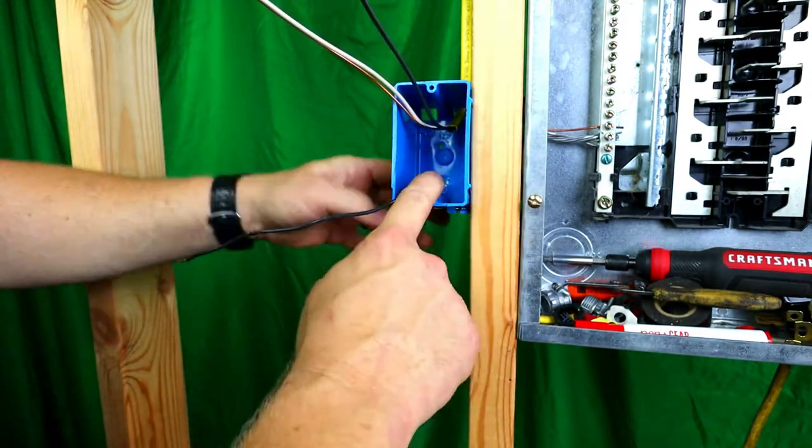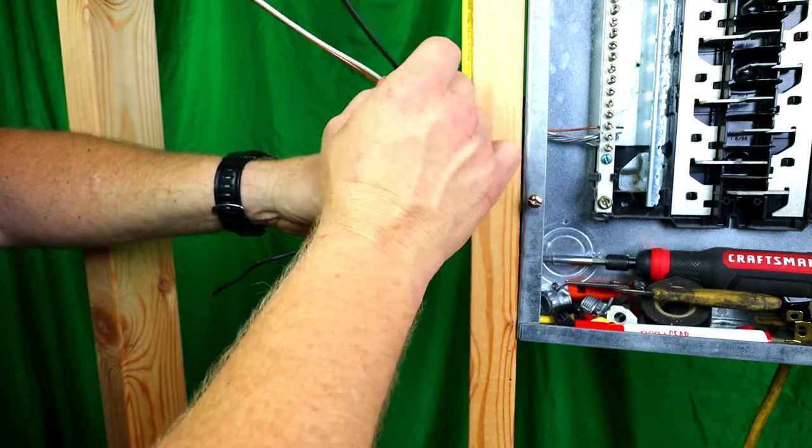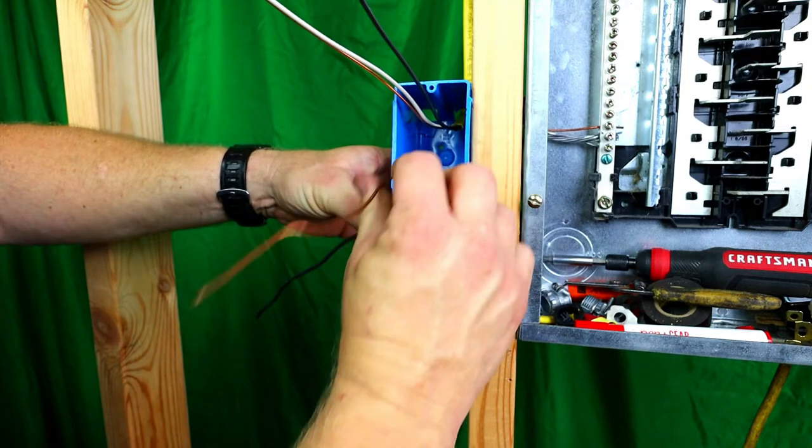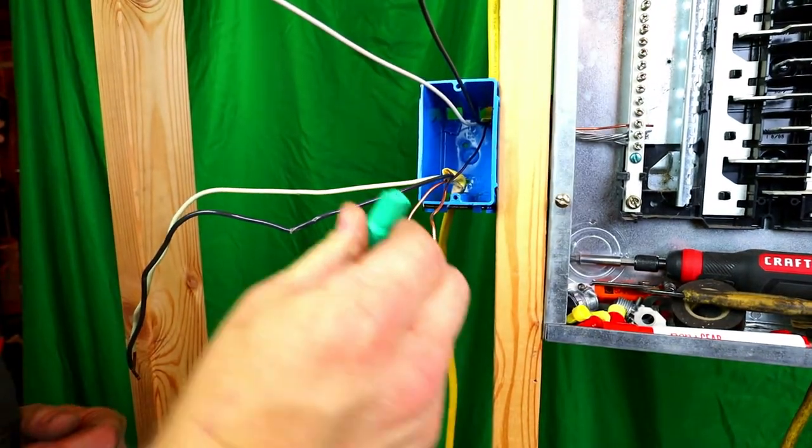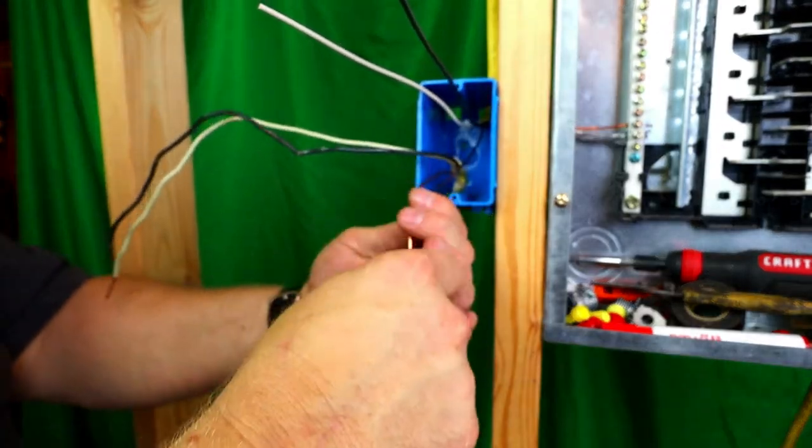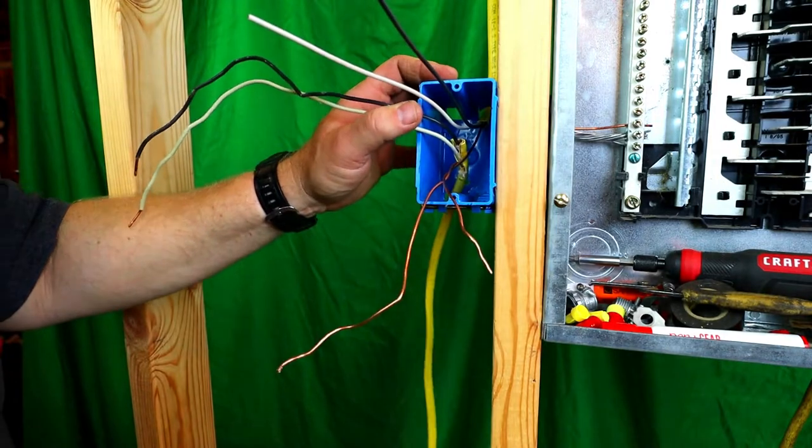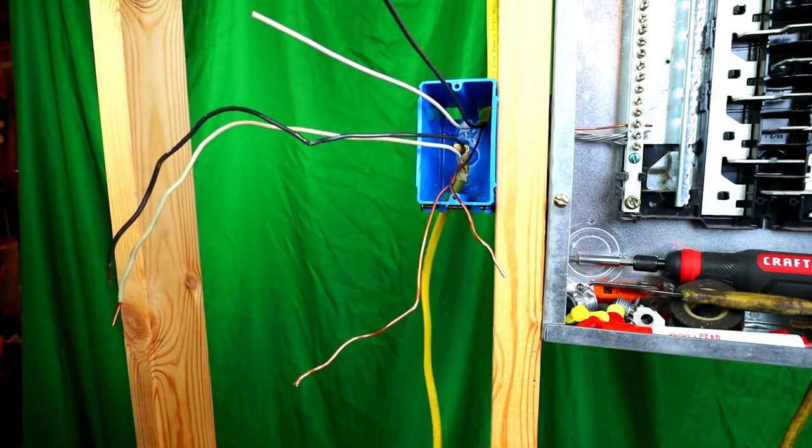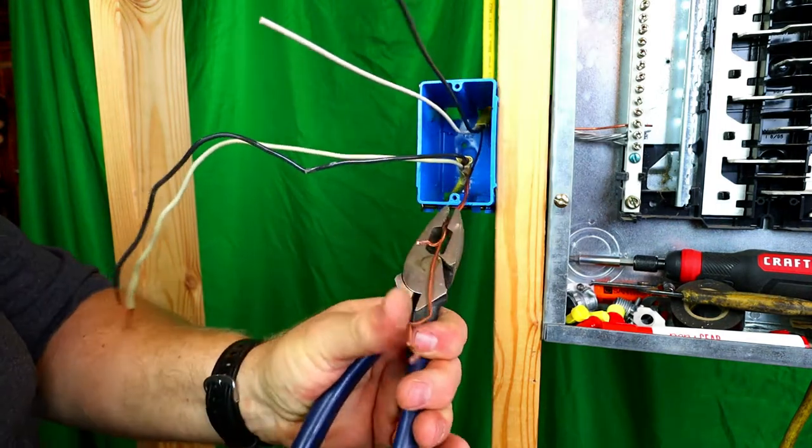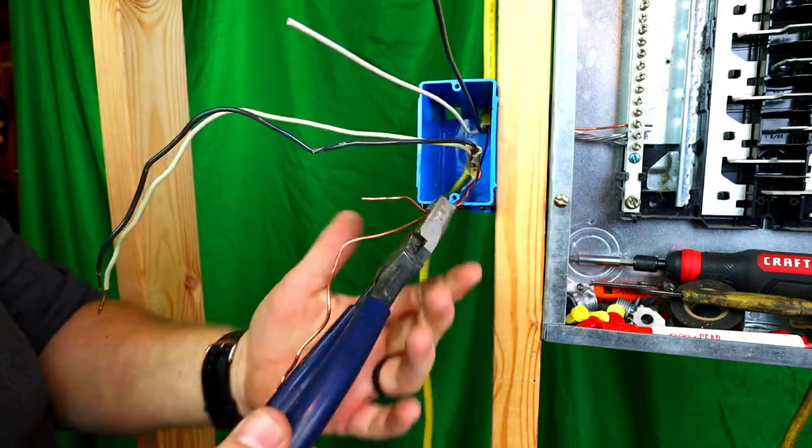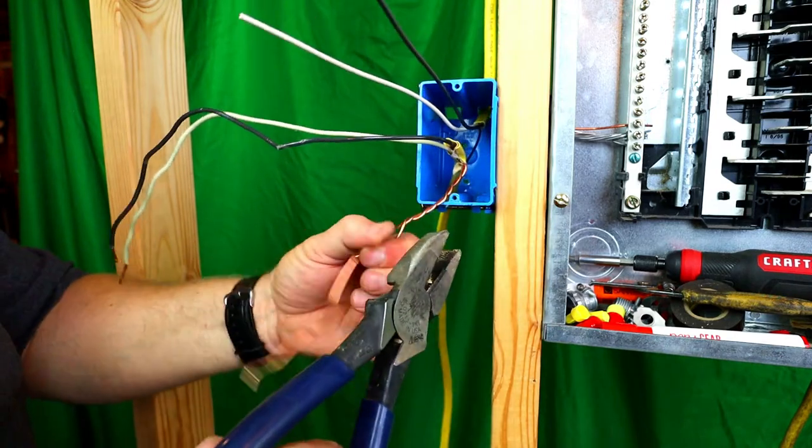So what we're going to do, this is your home run on the bottom. This goes to your light right here. So we're going to always start with the grounds first. So what I'm going to do is I'm going to put a green ground wire nut on this ground. So what we're going to do is we're going to twist these, right? Like so. Because you want to twist them always.